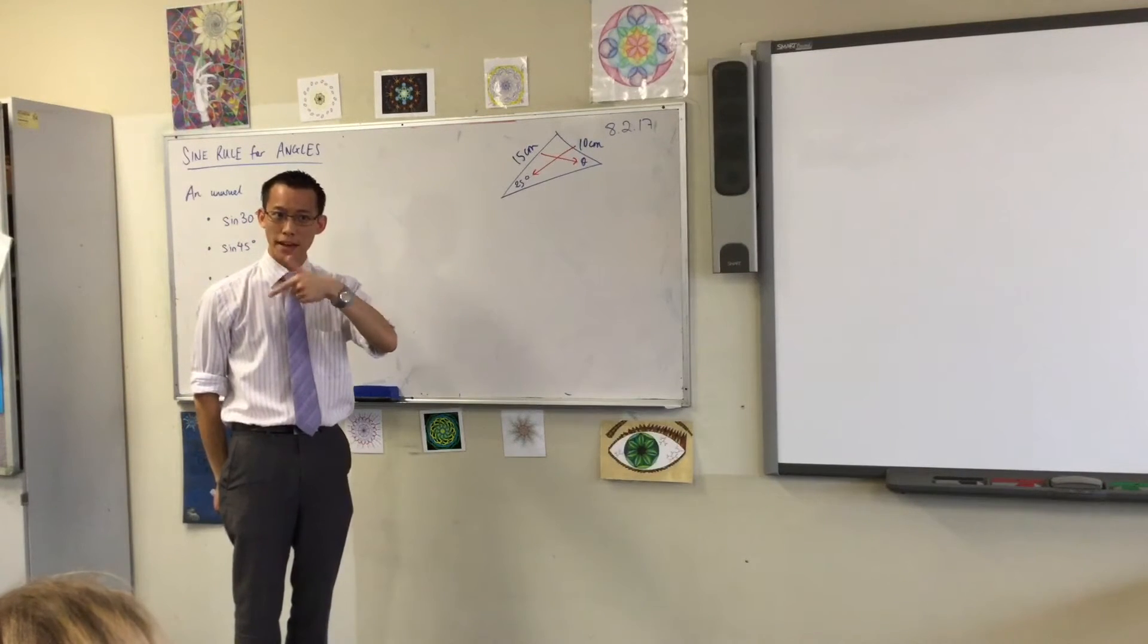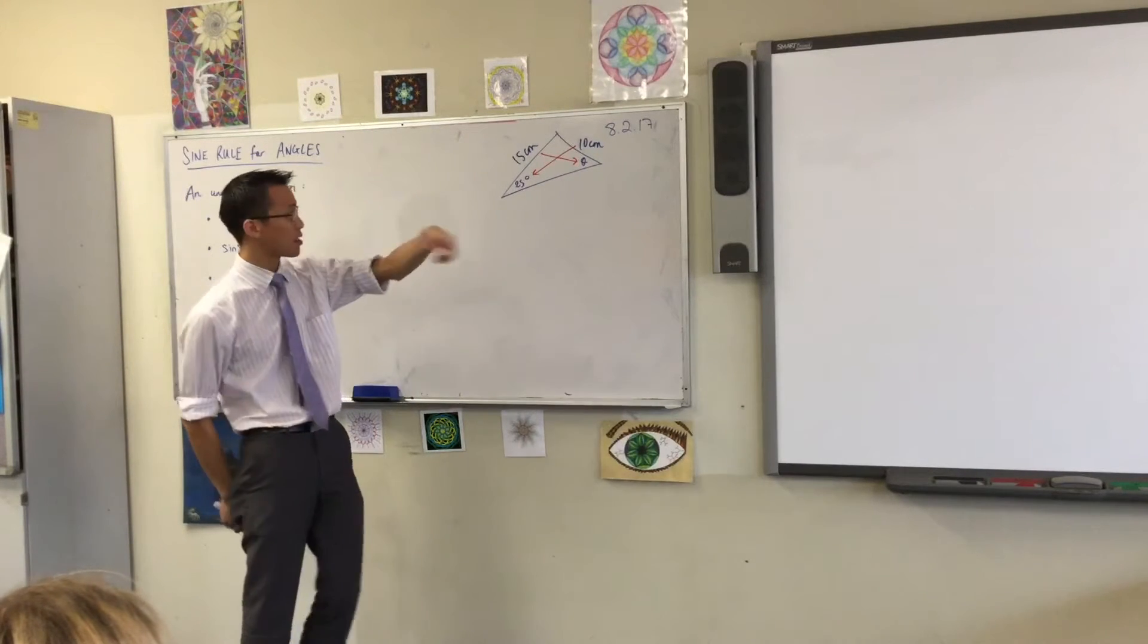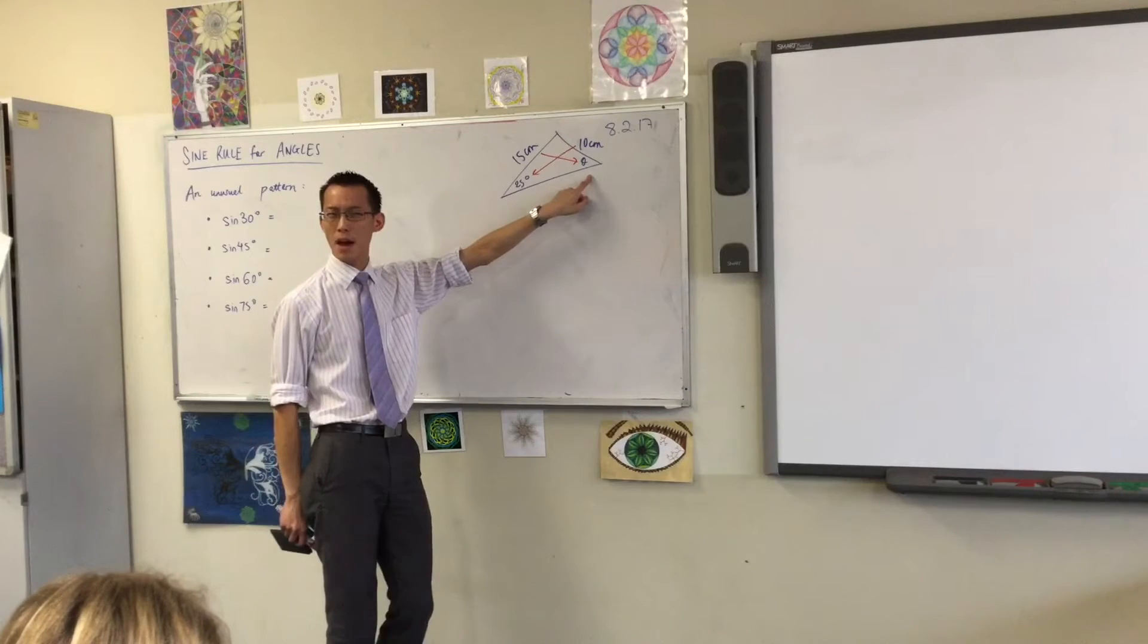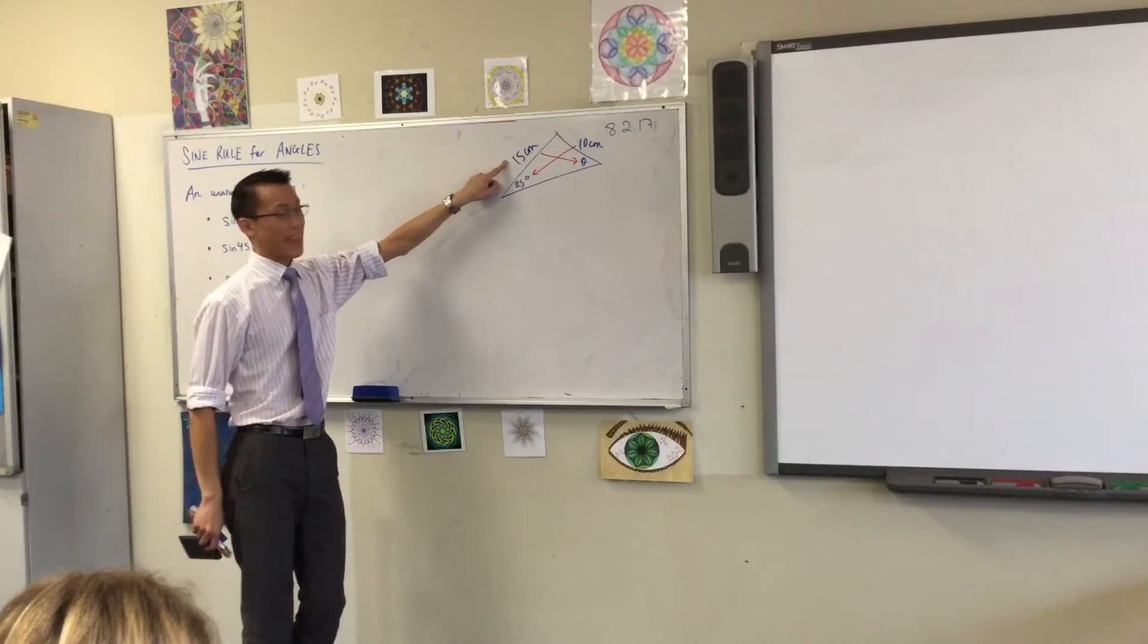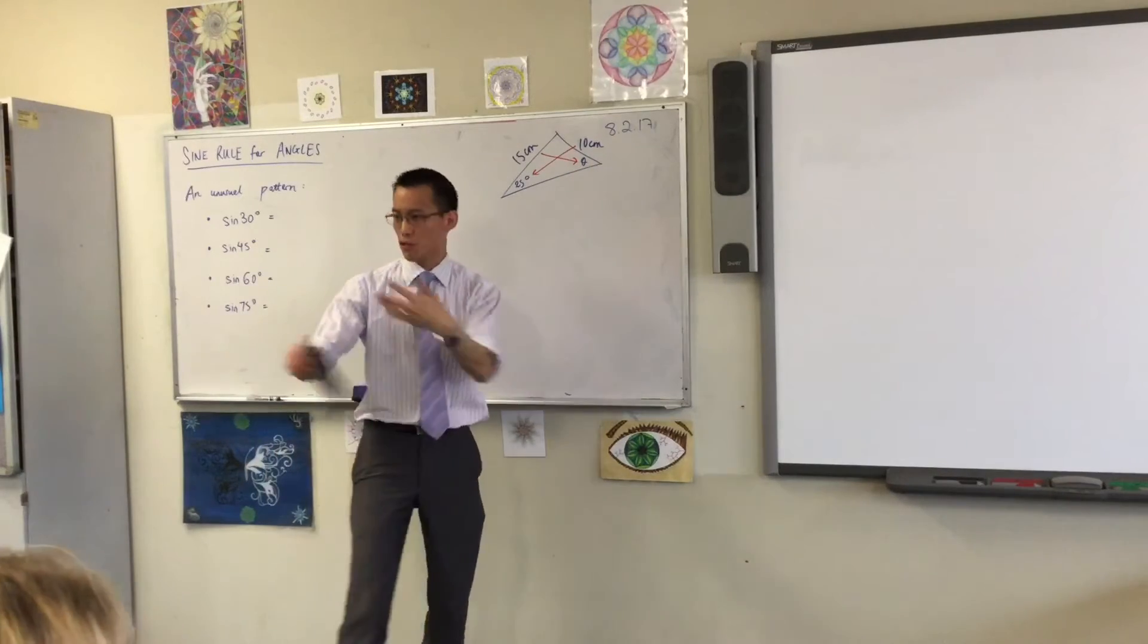The angle. So which form am I going to use? The one with sine first. So I'd say sine theta divided by 15—that's opposite—equals sine 25 on 10. And then you go ahead from there.